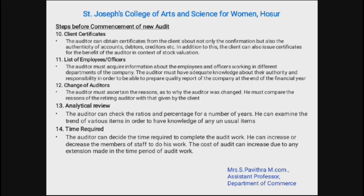Eleventh, list of employees or officers — the auditor must acquire information about the employees and officers working in different departments of the company. The auditor must have adequate knowledge about their authority and responsibility in order to be able to prepare a quality report of the company at the end of the financial year.